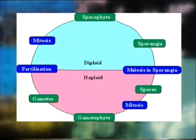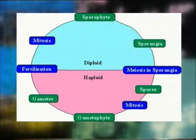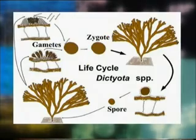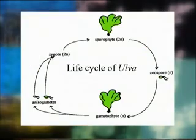It represents a true alternation of generation because there is alternation between a sporophytic individual with a gametophytic individual. This type of life cycle is exhibited by the members of Cladophorales, Ectocarpus and Dictyota of Phaeophyceae and Ulva of Chlorophyceae. Based on the morphology of the two alternating sporophytic and gametophytic generations, the diplo-haplontic life cycle is of two types.